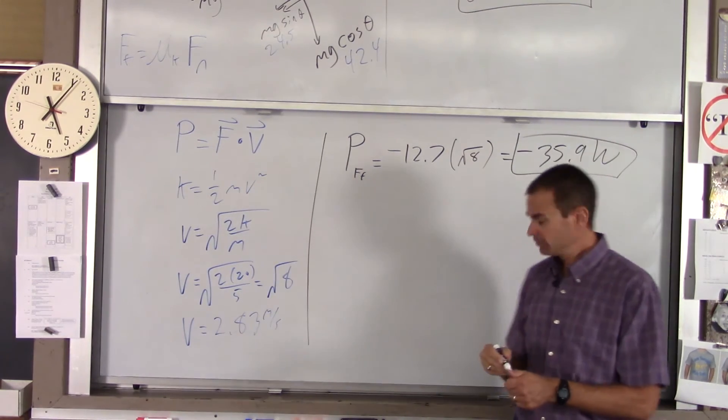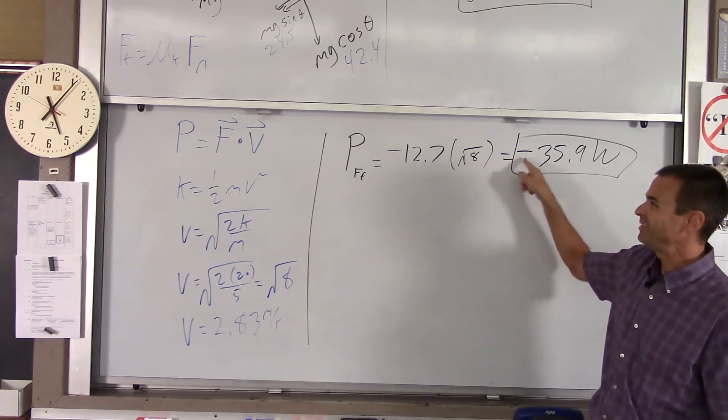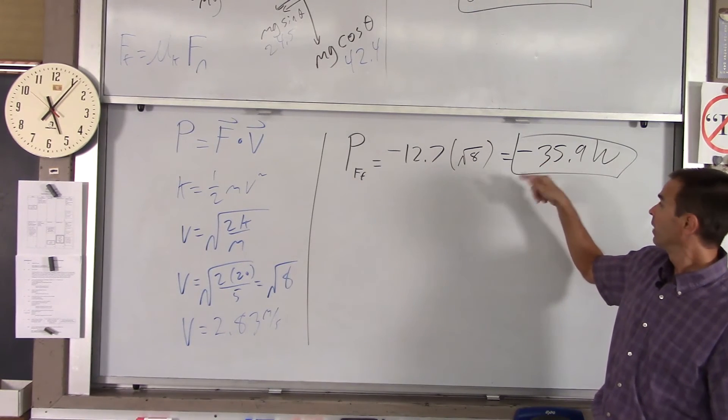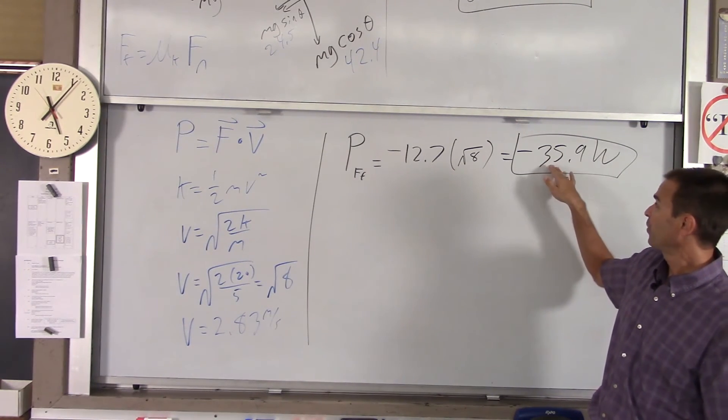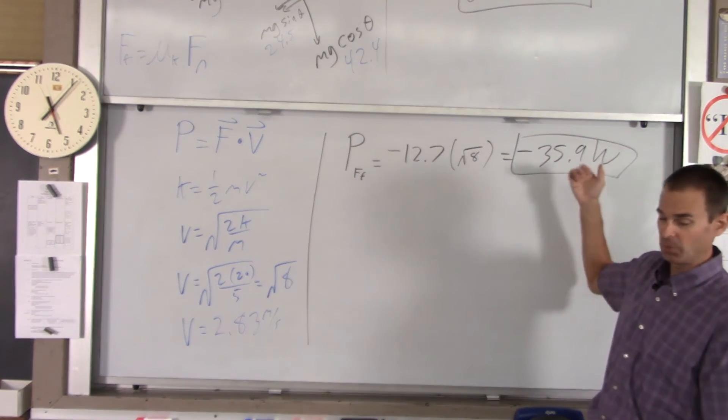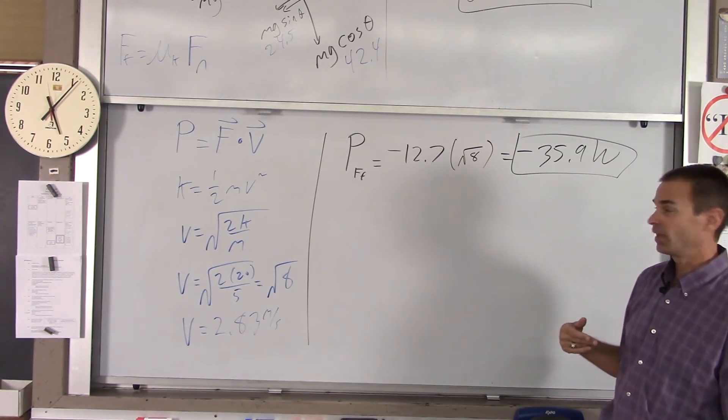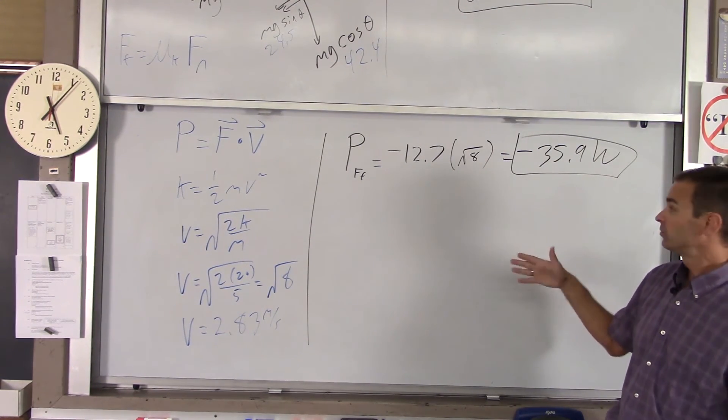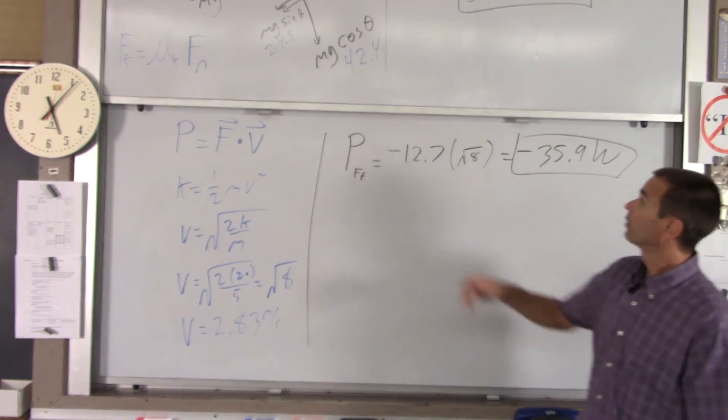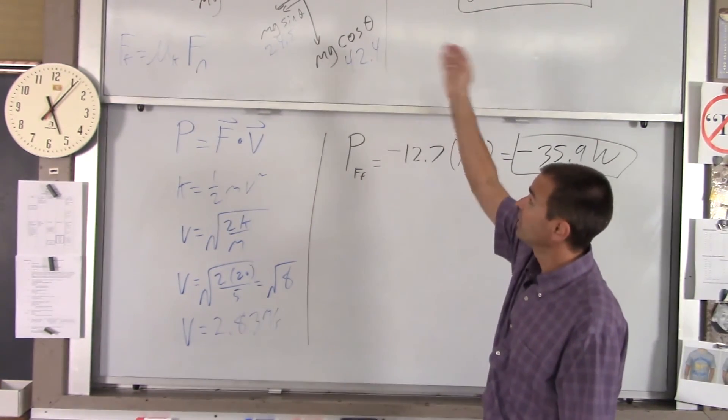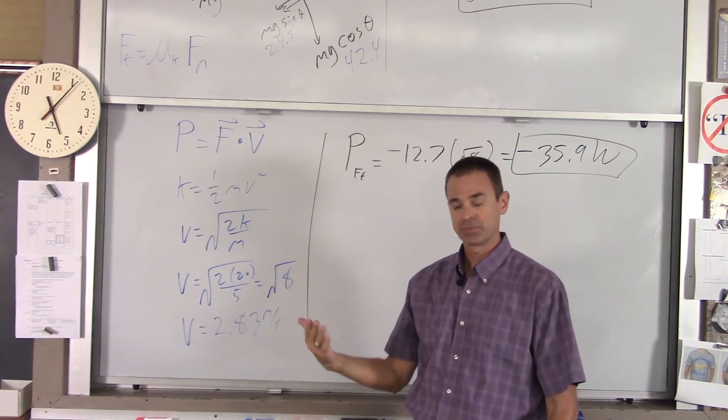Now, what's the negative tell us? That means, at that moment, friction is taking 35.9 joules per second, a watt is a joule per second, away from the crate at that moment. So, it's taking energy out. So, the crate had 20 joules of kinetic energy, but friction is taking that away.